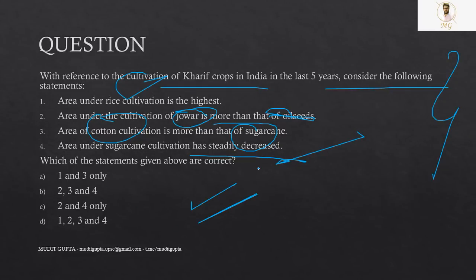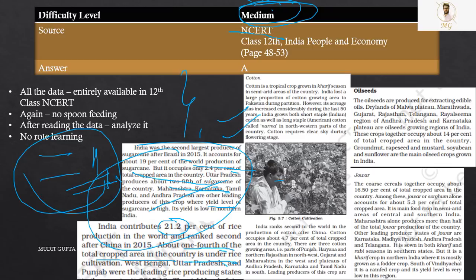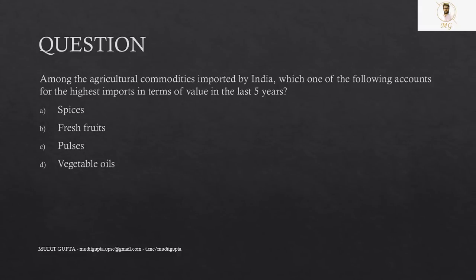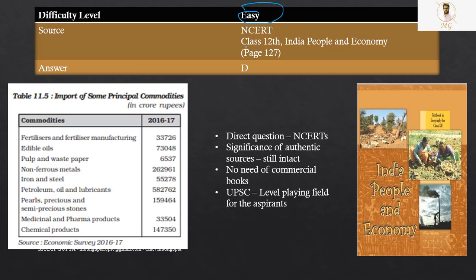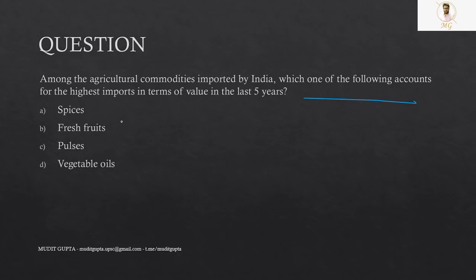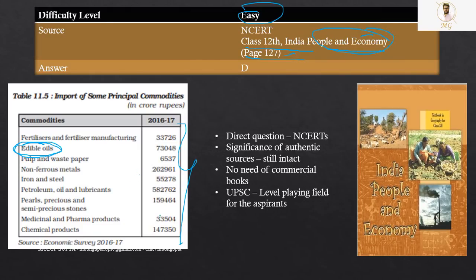So that is why I have put it in the medium difficulty level. So again, even though everything was given in NCERT, but you have to do some sort of data analysis to actually reach the right answer. As far as this particular question is concerned regarding highest import value, again, easy question directly given in 12th class NCERT, India people and economy page number 127. It is given that edible oils, they are having the maximum import value.